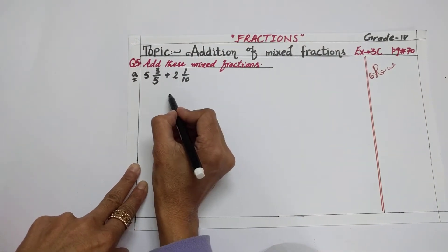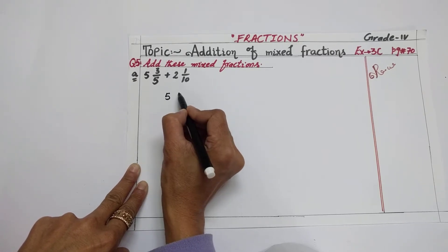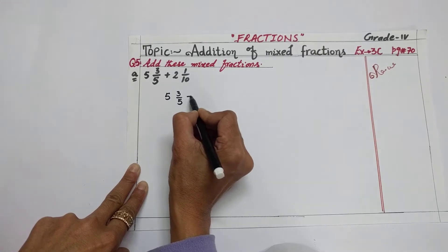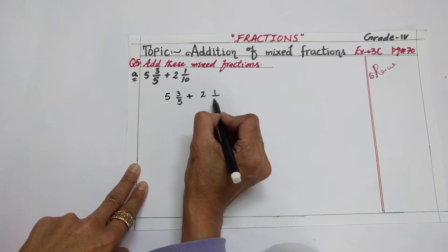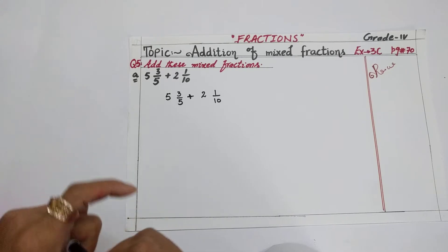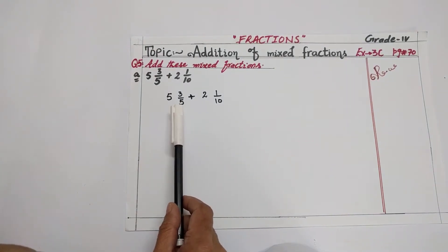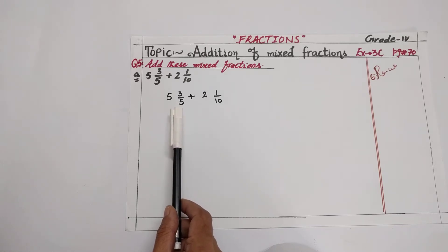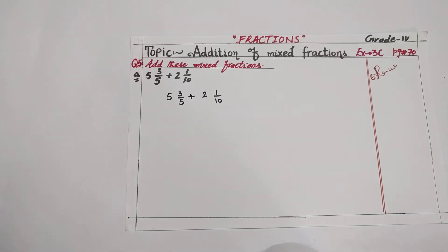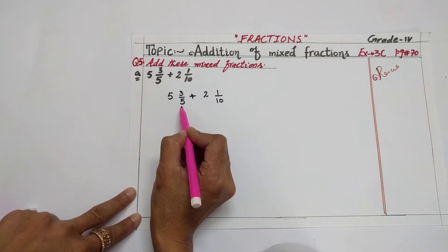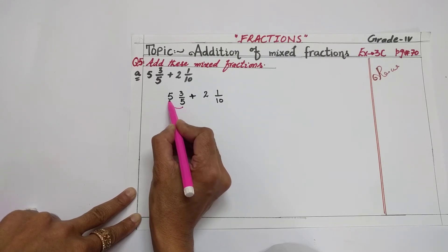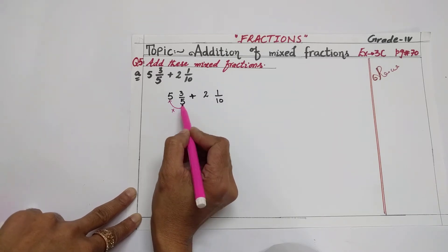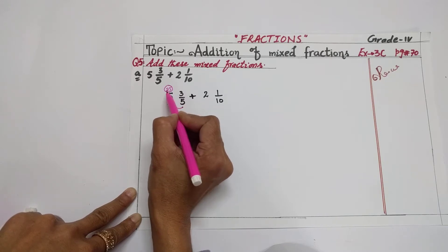So 5 and 3 by 5 is a mixed fraction, and 2 and 1 by 10 is a mixed fraction. Our question is how to add these two mixed fractions. For addition, firstly you have to convert the mixed fraction into an improper fraction. You have already learned how to do this. The first step is: multiply the denominator by the whole. So 5 fives are 25.